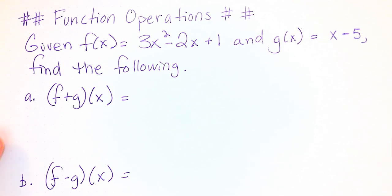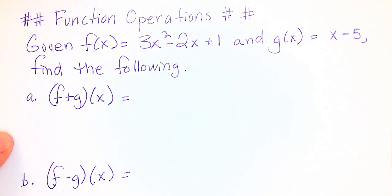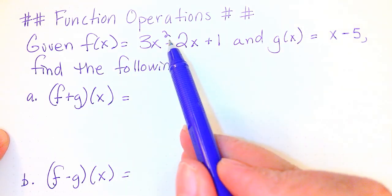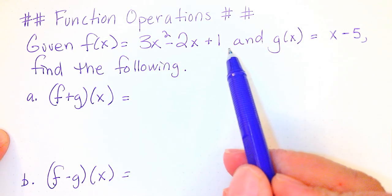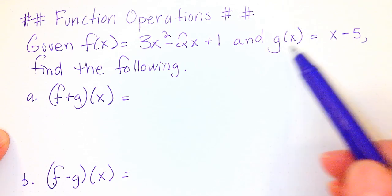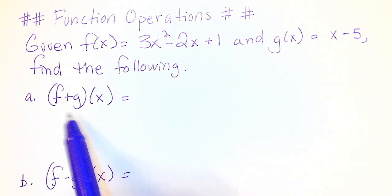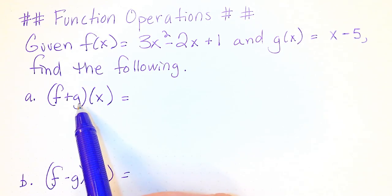Our first part is adding two functions. So if we're given f(x) = 3x² - 2x + 1 and g(x) = x - 5, we want to find (f + g)(x).